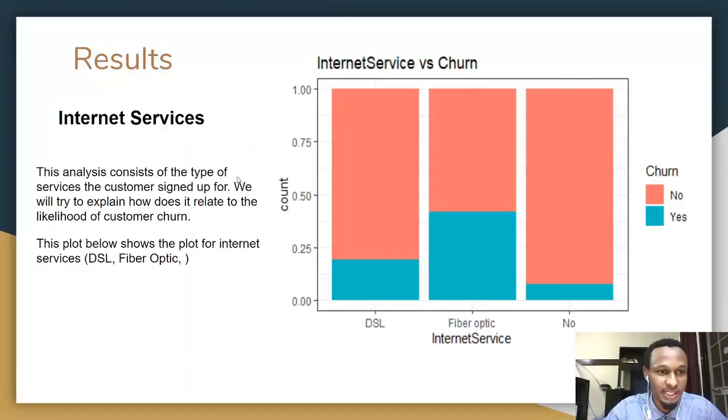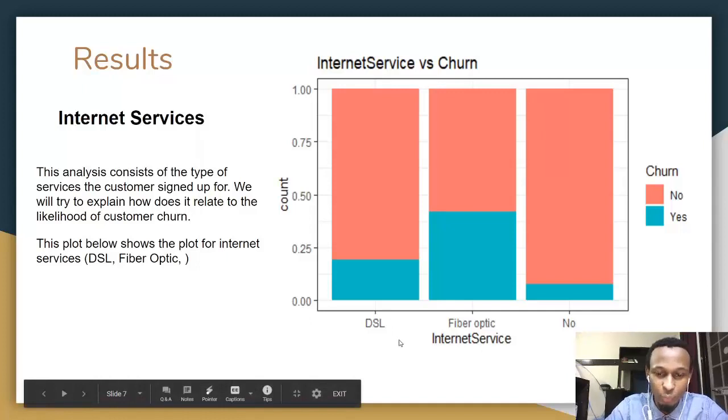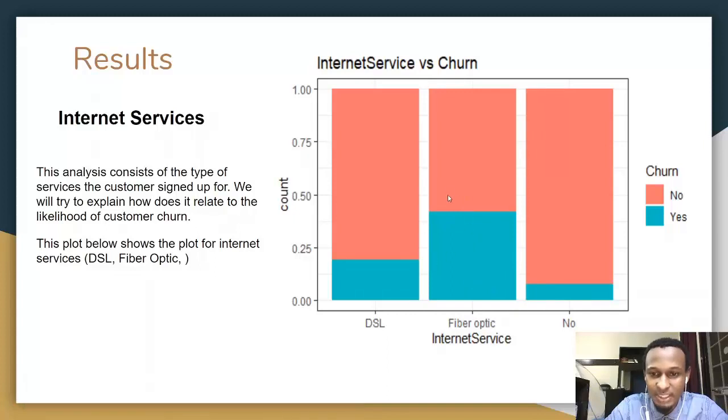Hello, I'm Mohamed Alpha, and I'm going to present the result. The result for the internet service provided, we'll be analyzing this result from different services provided to customers. From this graph, what we can see here is that it is the analysis of the services that the customer signed up for. For instance, we have here the DSL service, the fiber optical service, and the no service. From these three bar charts here, we can see that the fiber optical service has the one that has got the highest number of churn rate.